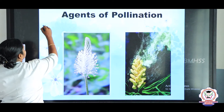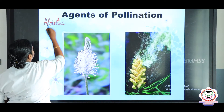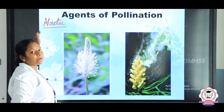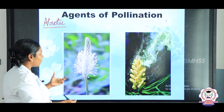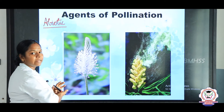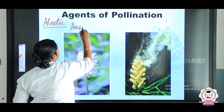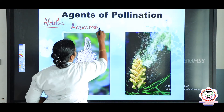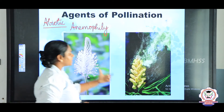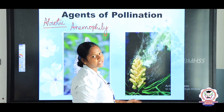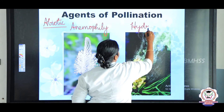Now we are going to discuss about the abiotic factors. Abiotic means non-living. What are all the non-living factors responsible for pollination? The first is pollination through wind, which we call anemophily. The next is pollination through water — hydro means water — which we call hydrophily.